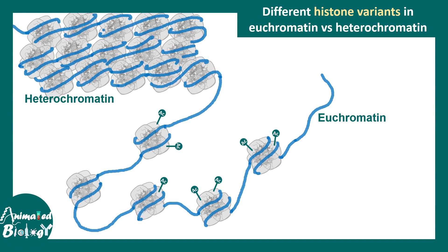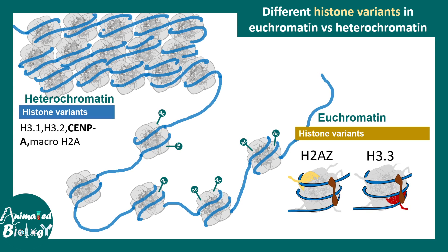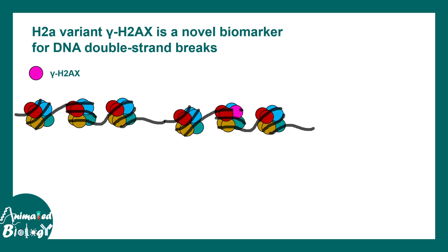Different types of chromatin are associated with different histone variants. In the euchromatin region we find variants like H2A.Z and H3.3, whereas the heterochromatin region is enriched in H3.1 and H3.2. The centromeric heterochromatin region is highly enriched in CENP-A and macroH2A type histone variants. Histone variants thus determine chromatin accessibility and chromosome state, which is important for understanding gene expression regulation.